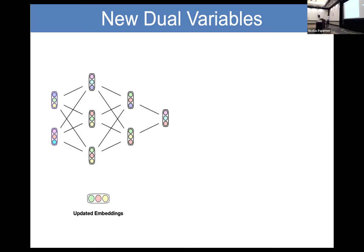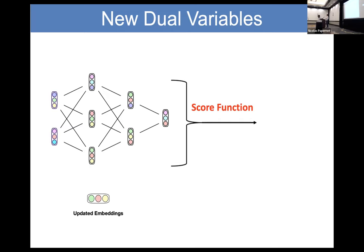With all these embedding vectors, we use a learned score function to convert them into dual variables — more precisely, into a movement in dual variable space. Just as in gradient descent we take multiple steps using the gradient, here we repeatedly call the GNN to get different directions of movement and hopefully reach the optimal dual value more quickly than using the gradient alone.